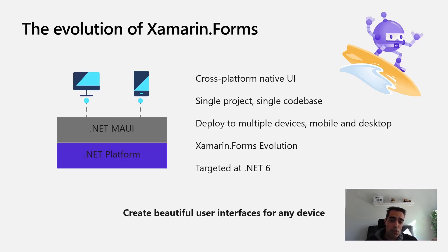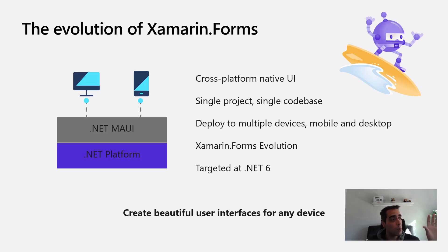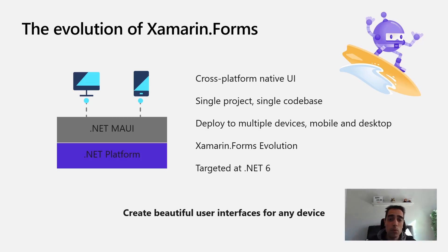At the end, we are creating a native application. So when we have, for example, a button in the abstraction, we are mapping that to a UIButton on iOS. We are using a native UI with a single project and a single code base that allows us to deploy to multiple devices, including mobile and desktop.